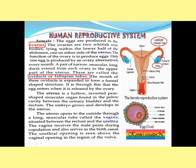The vagina receives the sperms or male gametes during sexual intercourse. It also serves as a birth canal — the baby, which has been developing in the uterus for nine months, comes out through the vagina once it is mature. So the vagina has two purposes: to receive the male gametes during intercourse, and to serve as the passage through which the baby comes into the world.